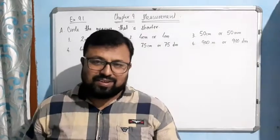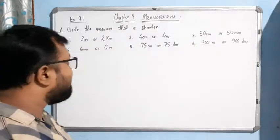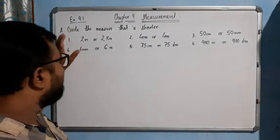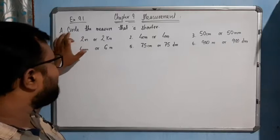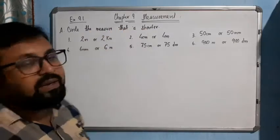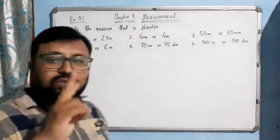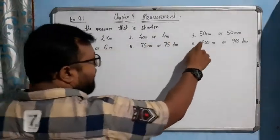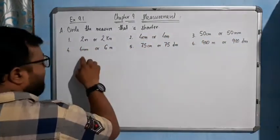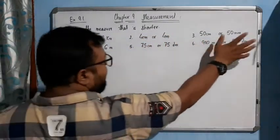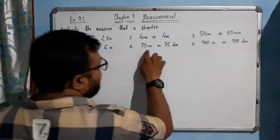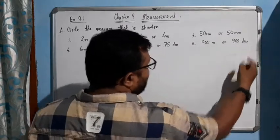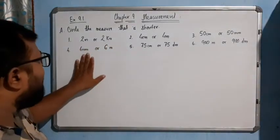Hello students, welcome to the first exercise of this chapter, Exercise 9.1. Question A says to circle the measure that is shorter. The pairs given are: 2 meter and 2 kilometer; 4 centimeter and 4 meter; 50 centimeter and 50 millimeter; 6 millimeter and 6 meter; 75 centimeter and 7 decimeter; 900 meter and 900 decimeter.